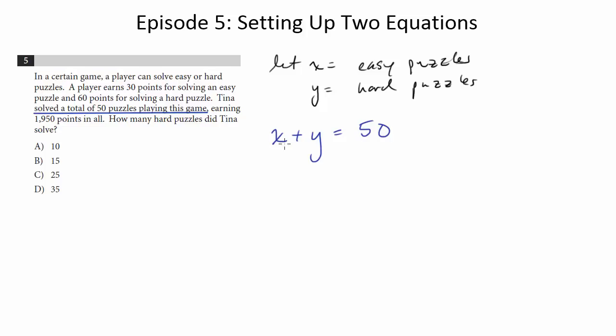But of course, X and Y could be anything here. It could be 25 and 25, 24 and 26. I mean, who knows? So we need another equation so that we can focus and narrow down the answer. So what's the other equation? And now this is where we bring in the value.